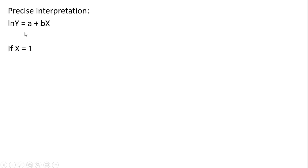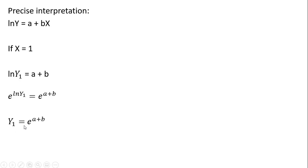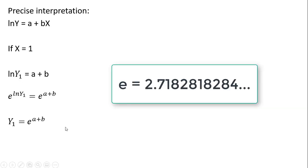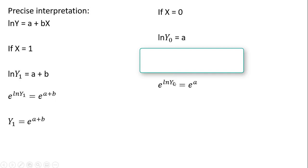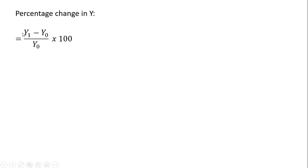Now let's get a more precise interpretation. Same setup: if x equals 1, our equation looks like a plus b times 1, subscripted to 1 to indicate the dummy variable equals 1. Exponentiating both sides, y₁ equals e raised to a plus b, where e is the mathematical constant 2.71. If x equals 0, the term becomes b times 0, and exponentiating both sides simplifies accordingly. The percentage change in y is given by the formula multiplied by 100.